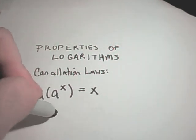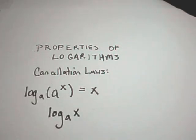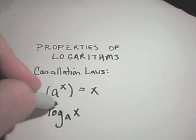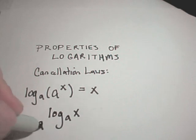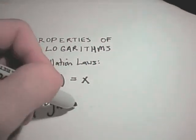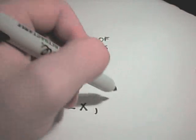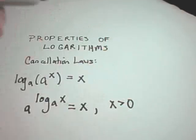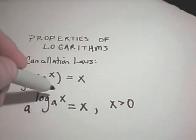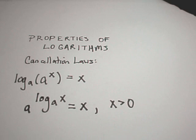Likewise, it says if we have a logarithm, log base a of x, it says if we take that number and we take a and raise it to that number, again, we simply get x back. This is only true if x is greater than zero. And again, that's just the stipulation because the domain of a logarithm are values of x greater than zero.